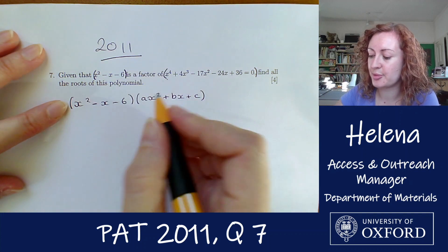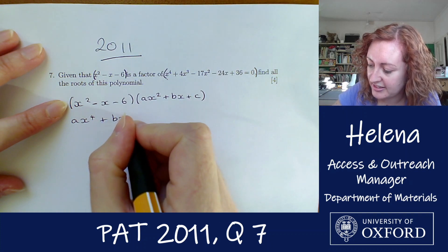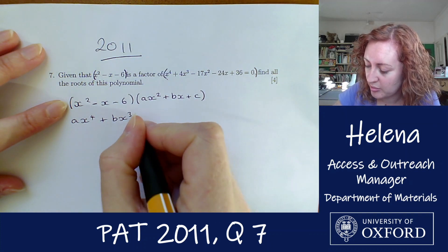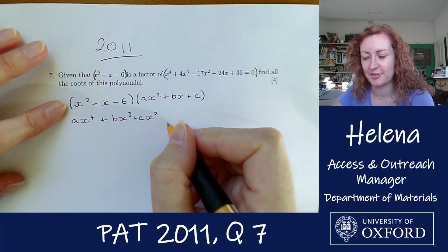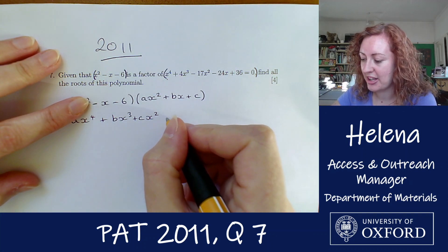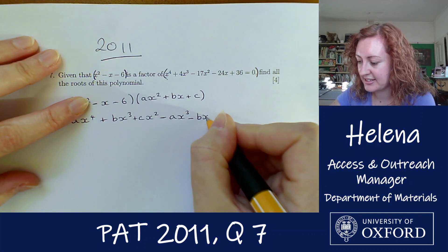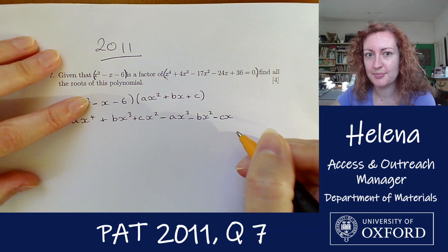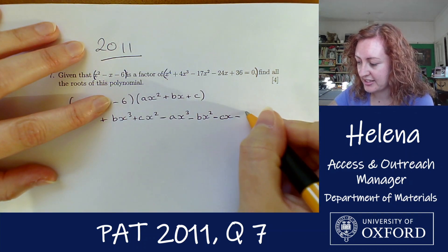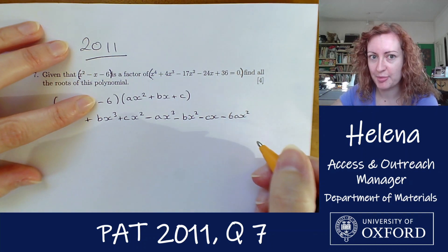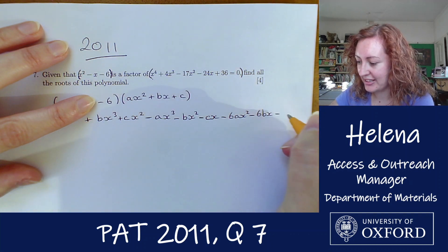Multiplying out the two brackets: starting with the first term we get ax to the four plus bx cubed plus cx squared. From the second term we get minus ax cubed minus bx squared minus cx. And multiplying by minus 6 we have minus 6ax squared minus 6bx minus 6c.